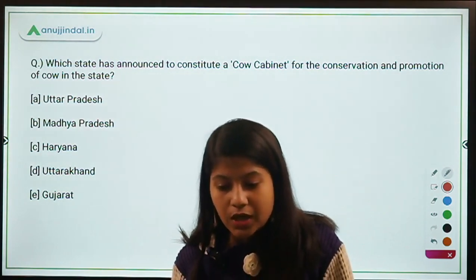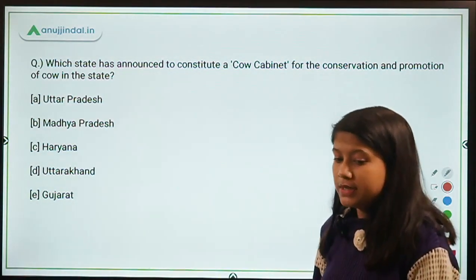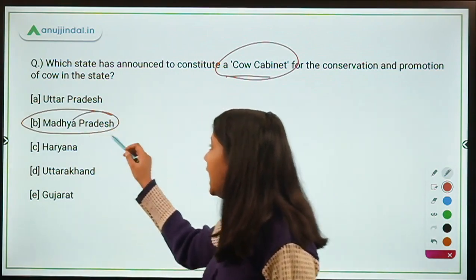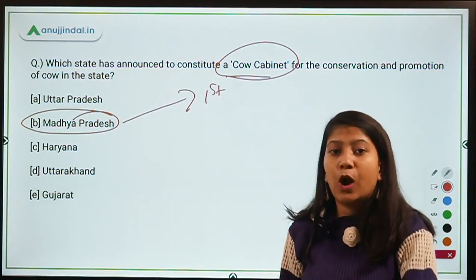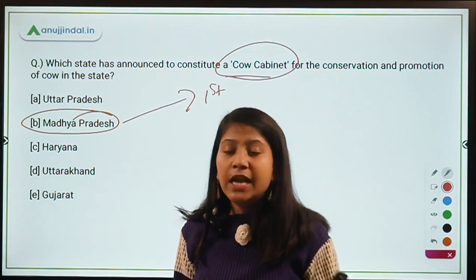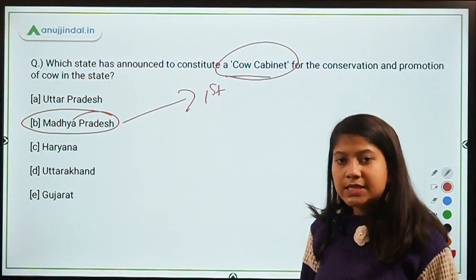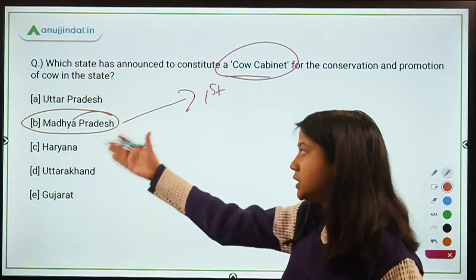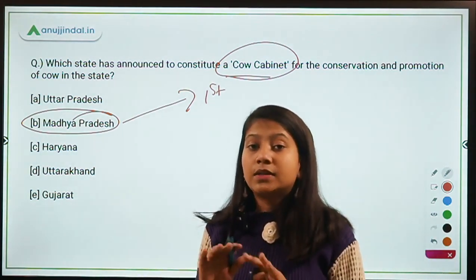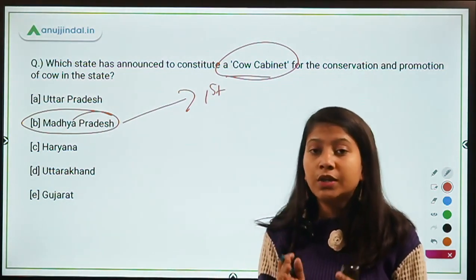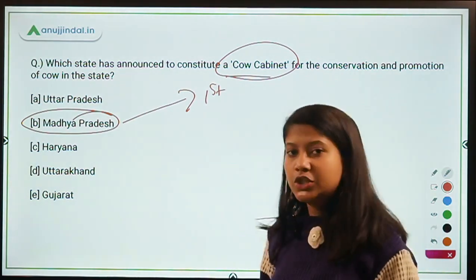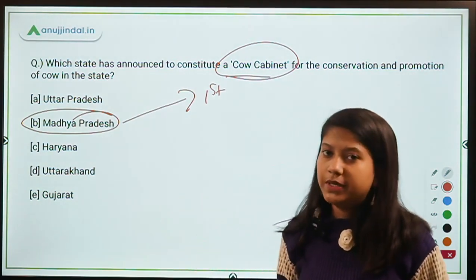Which state has announced to constitute the Cow Cabinet for the conservation and promotion of cows? The answer is Madhya Pradesh — it is the first state in India to have a Cow Cabinet, which will include not only cattle conservation activities but also forest and other conservation activities. Uttar Pradesh has also proposed a Cow Cabinet but nothing has been confirmed, so do not rely on that. Madhya Pradesh has clearly confirmed this Cow Cabinet.